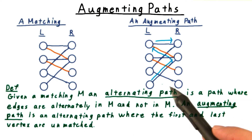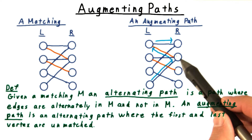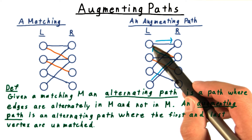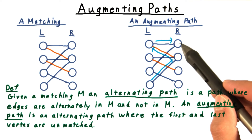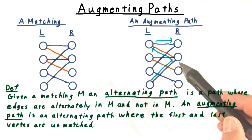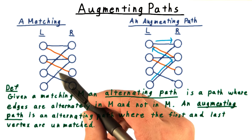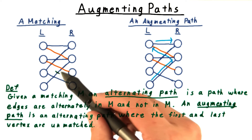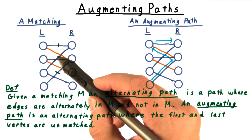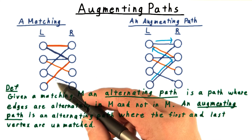For example, in this graph here, going from this unmatched vertex in L to this matched vertex in R, back to this matched one in L, and then to this unmatched one in R, constitutes an augmenting path. We use it to augment the matching by making the unmatched edges matched, and the matched edges unmatched, like so.